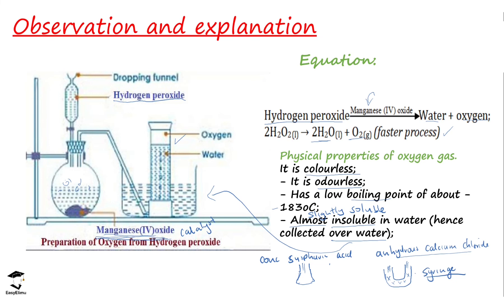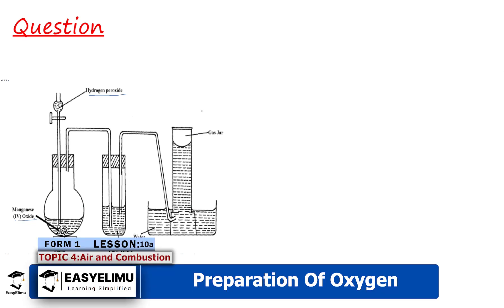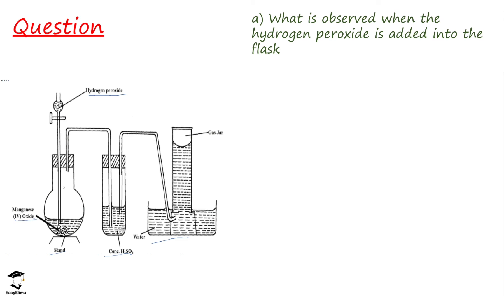Let's look at some questions to check understanding. Looking at the diagram — hydrogen peroxide in the dropping funnel, manganese(IV) oxide in the round-bottomed flask — the first question asks: what is observed when hydrogen peroxide is added to the flask? The answer is that you will see effervescence, meaning bubbles, which tells you that a gas is being formed.